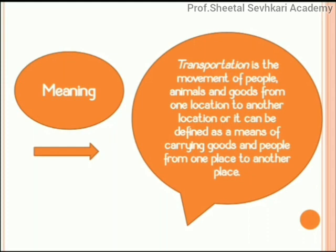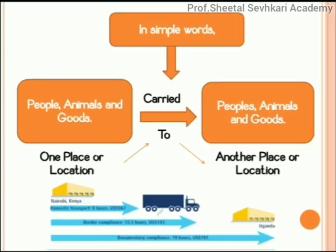Raw materials are carried to companies, which manufacture them, and then the finished product is given to the market or customer by means of transportation. So transportation is very important in today's world. Transportation is the movement of people, animals, and goods from one location to another, or it can be defined as the means of carrying goods and people from one place to another.